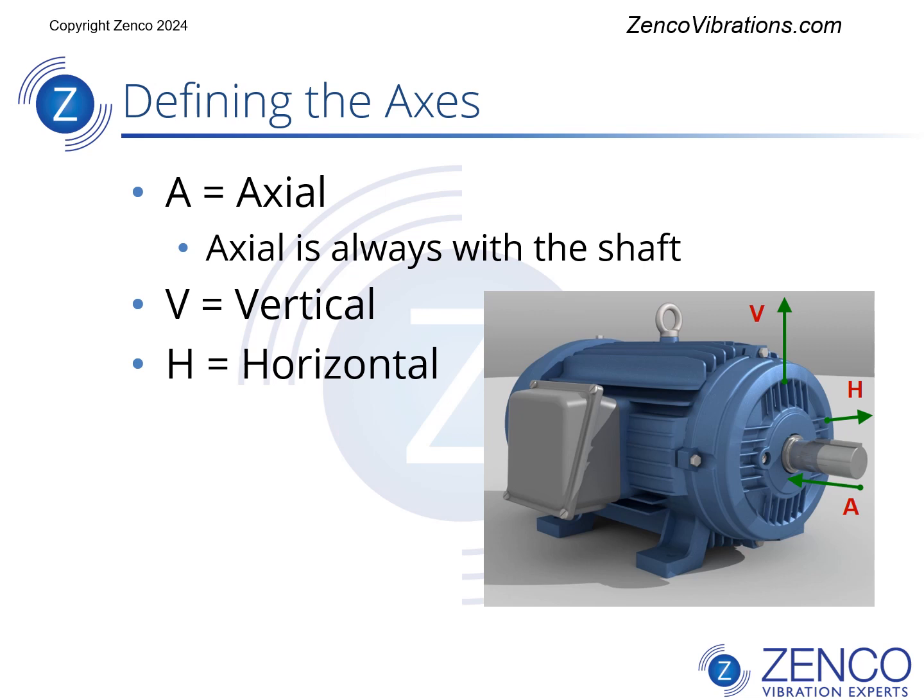In a horizontal machine, axial is always in the direction of the shaft. Vertical is vertical, and horizontal is horizontal.